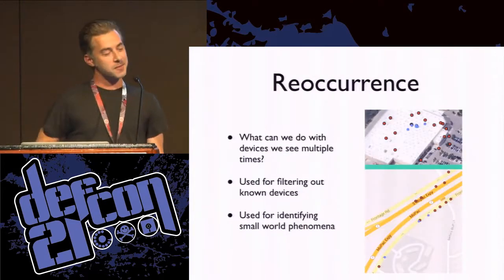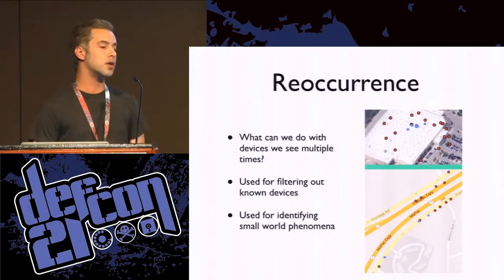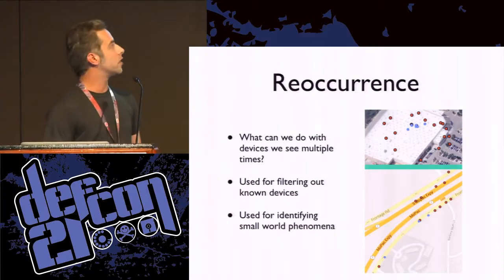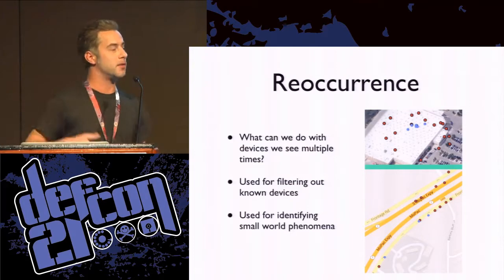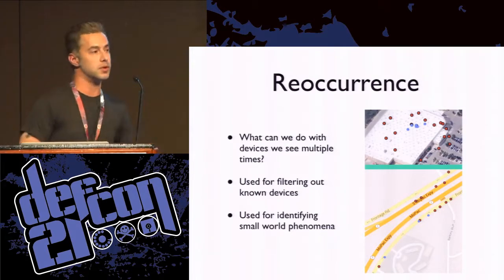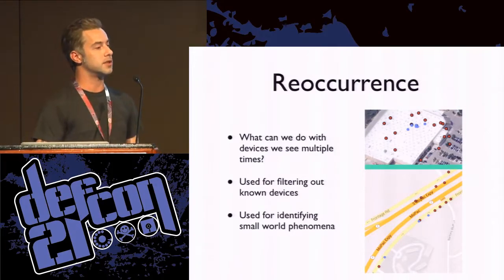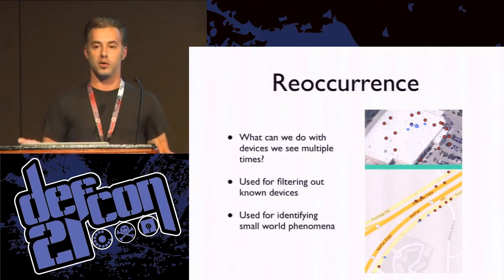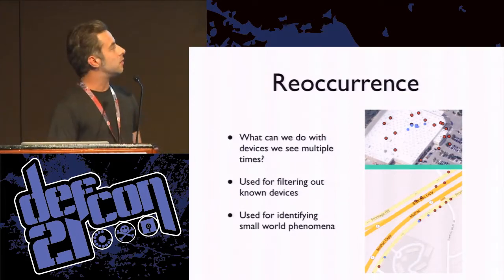Another cool thing you can do with geolocation information is look at the reoccurrence of devices in your data set. In this top picture, this is a local Costco that I go to repeatedly with my phone scanning. On this map, the blue dots are devices that are stationary and local to that particular Costco, while all the red dots are devices not local — most likely people traversing the store at the time. That's one way you can look at geolocation information with this data, which was pretty neat.